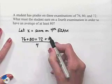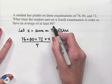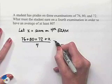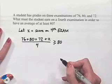We want that average to be at least 80. That means that the average has to be greater than or equal to the value of 80.